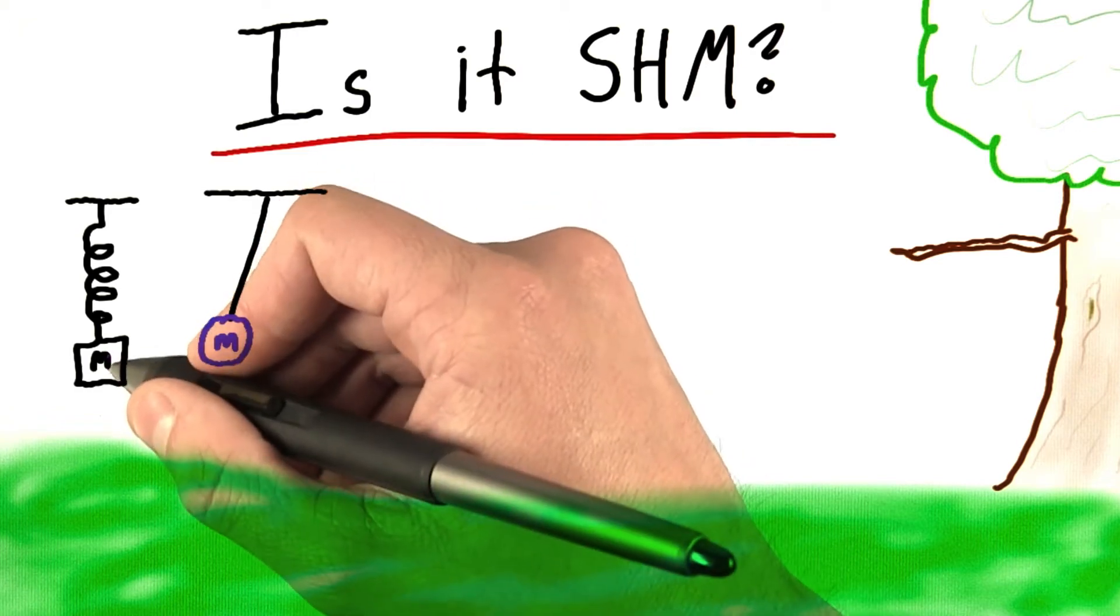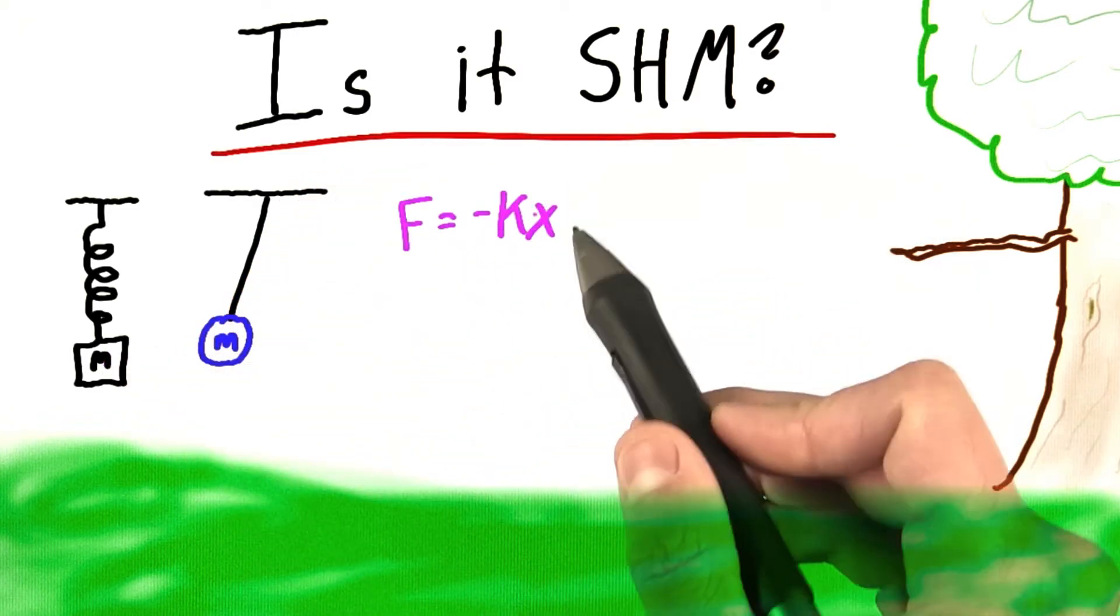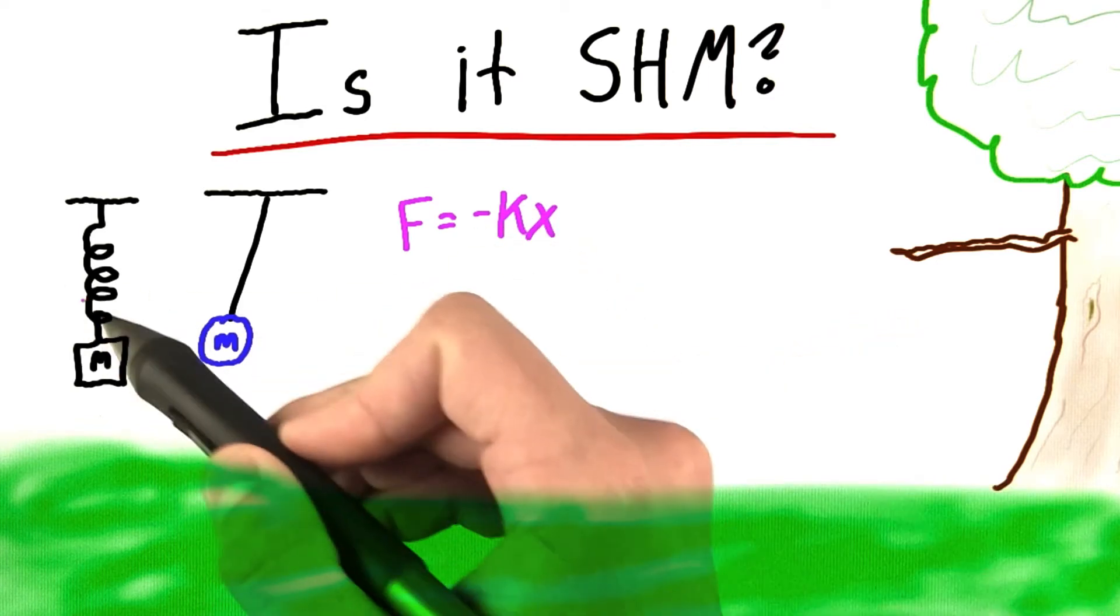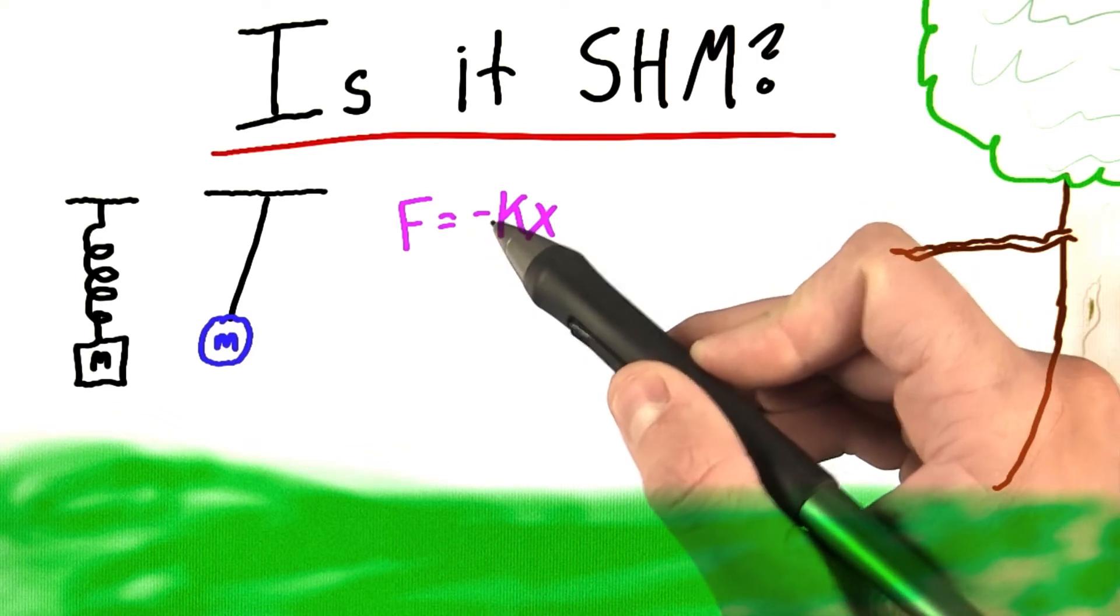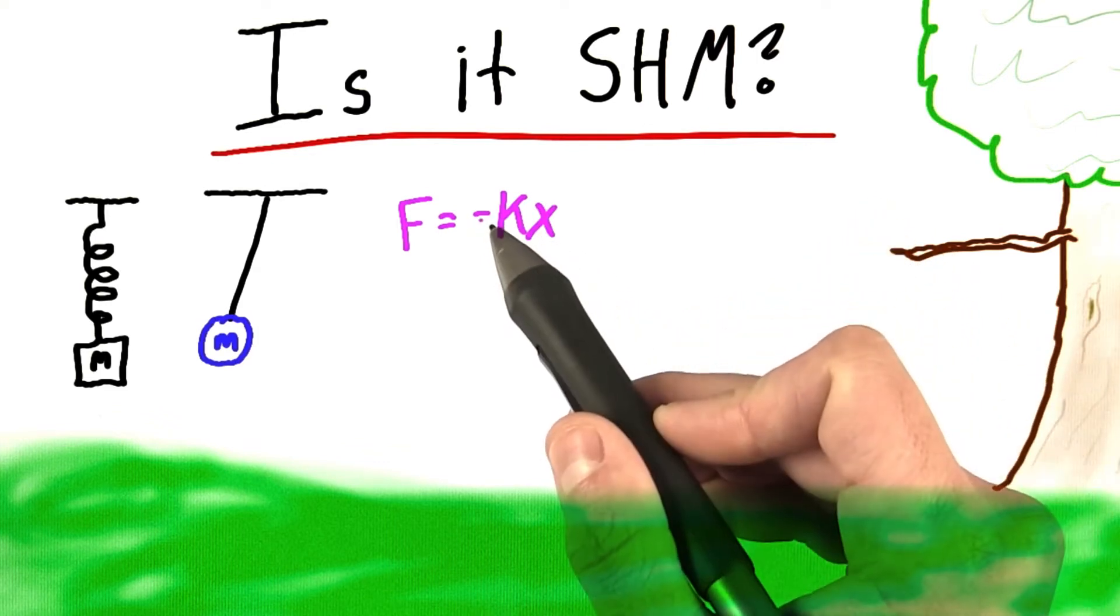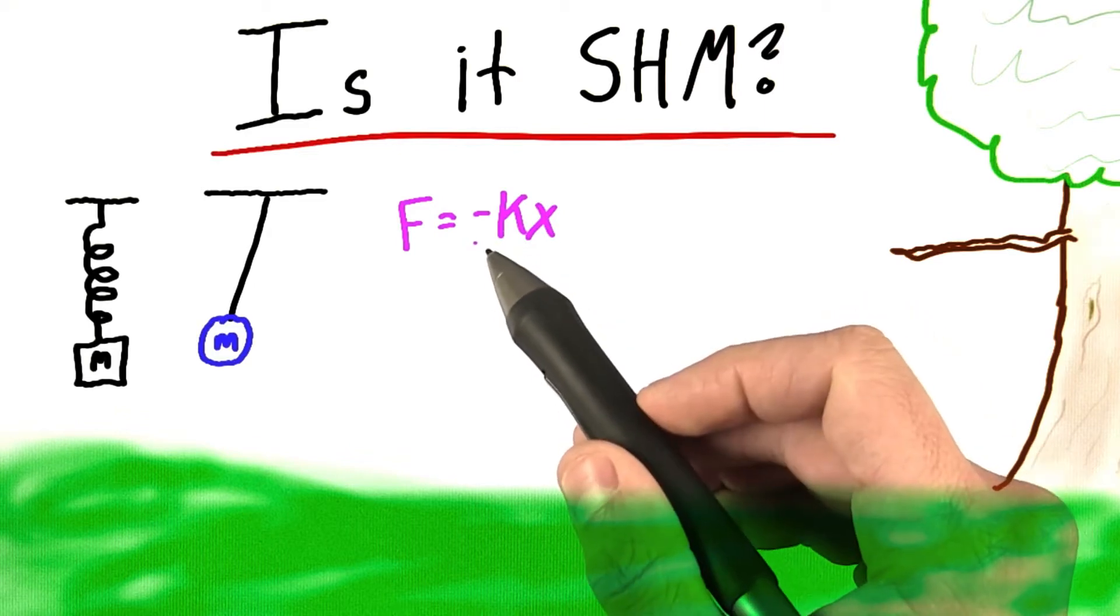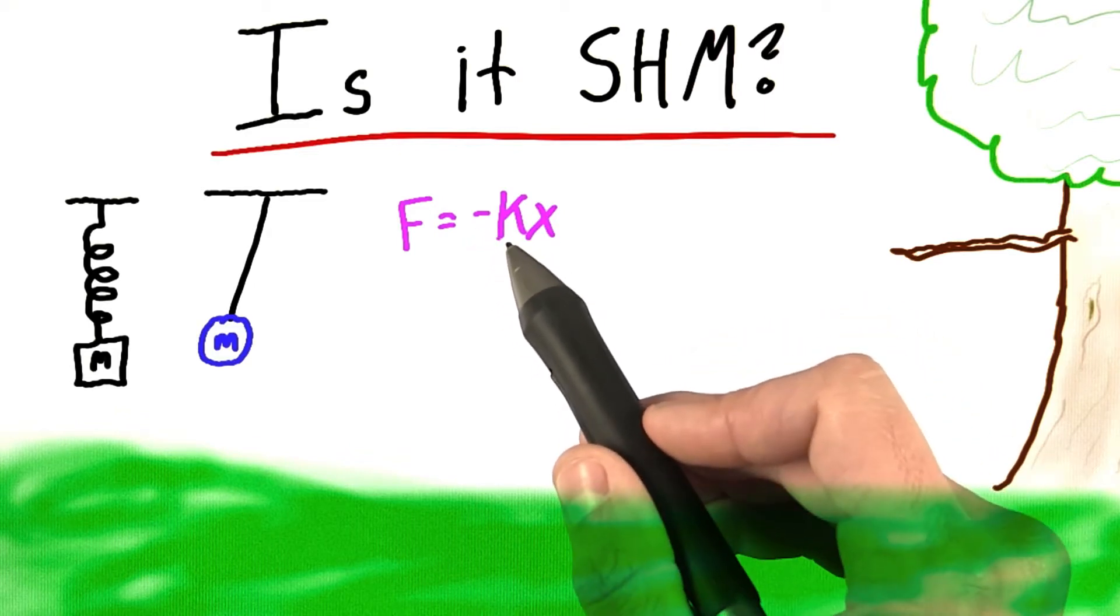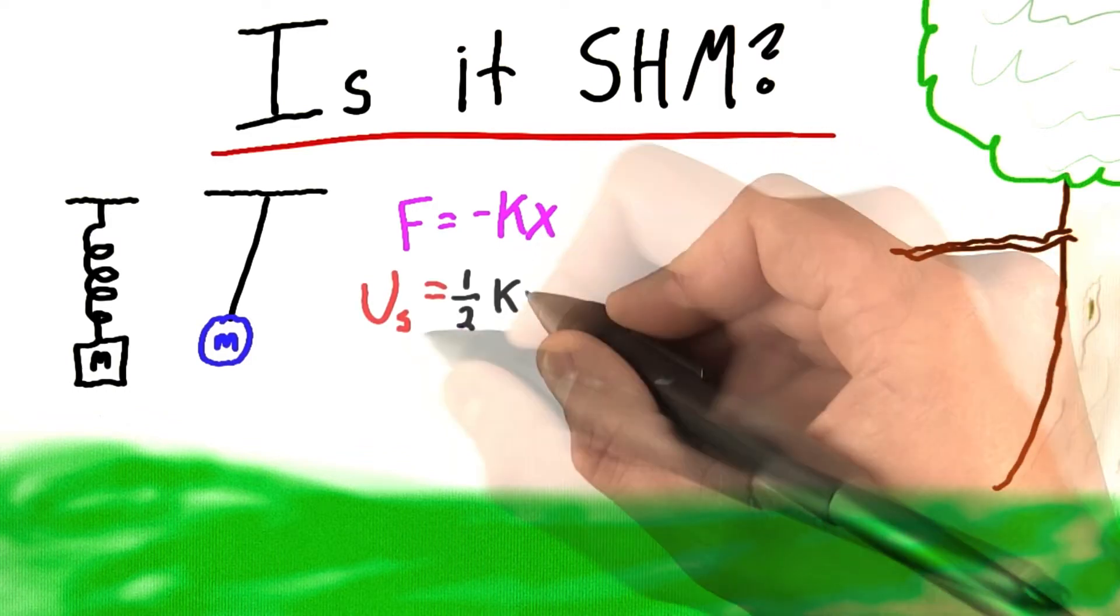For example, for the mass on the spring, the restoring force was equal to minus k times x. The k was just a spring constant, x was its displacement from equilibrium, and the minus sign was very essential. The minus sign told us that the force was always opposite the displacement, so it tends to restore the mass to its equilibrium. Now, this is thinking in terms of force. What about potential energy?